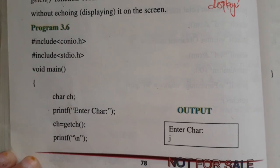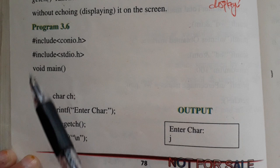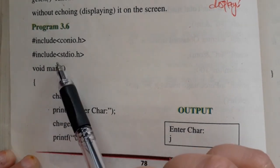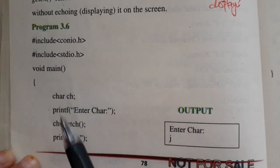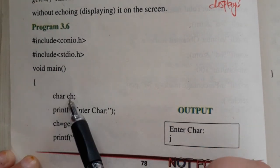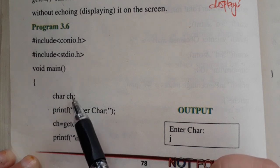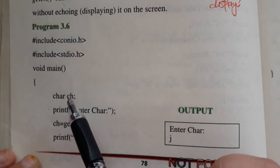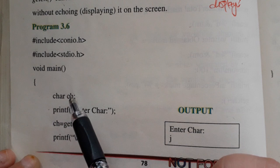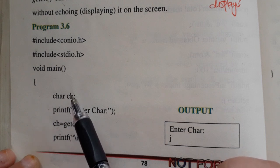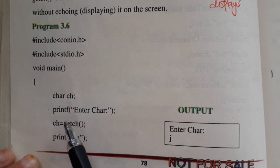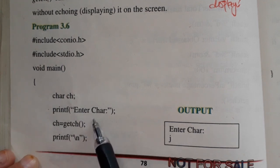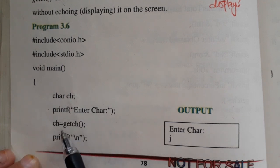اب اس program کو دیکھیں، اس سے آپ کو سمجھ آئے گی۔ Program میں hash include conio.h، stdio.h اور main function ہے۔ Character ch variable ہم نے declare کیا - ch کی جگہ a, b, c کوئی بھی variable ہو سکتا ہے۔ پھر printf کے ساتھ enter کرنے کی prompt ہے۔